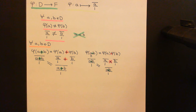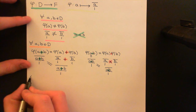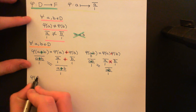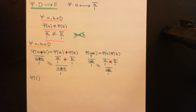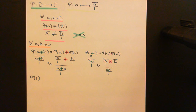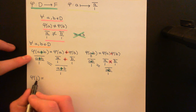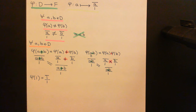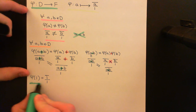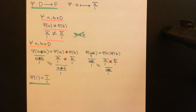Indeed this statement holds as well, and all arguments apply for whatever A and B you pick from the integral domain. Finally, we just need to prove that φ of the multiplicative identity in the integral domain is mapped onto the multiplicative identity in the fraction field. φ(1) is by definition [1/1], which is exactly equal to the multiplicative identity in our fraction field. So that one is true as well.